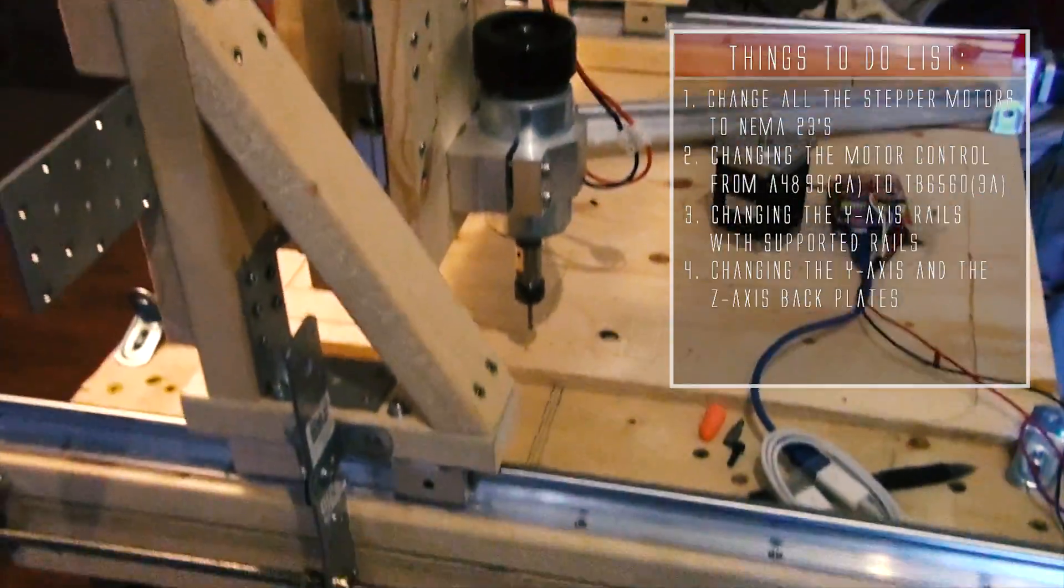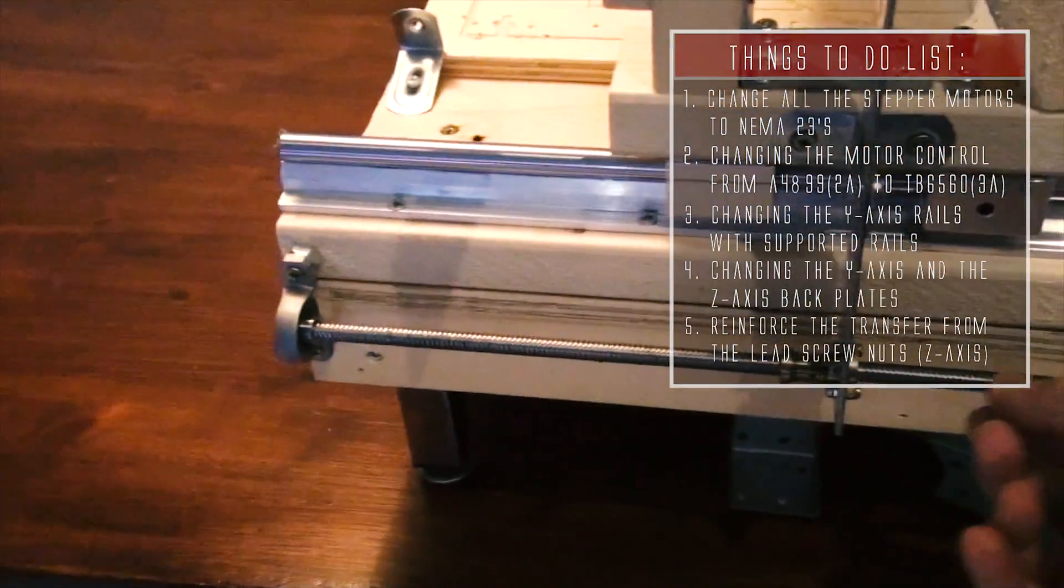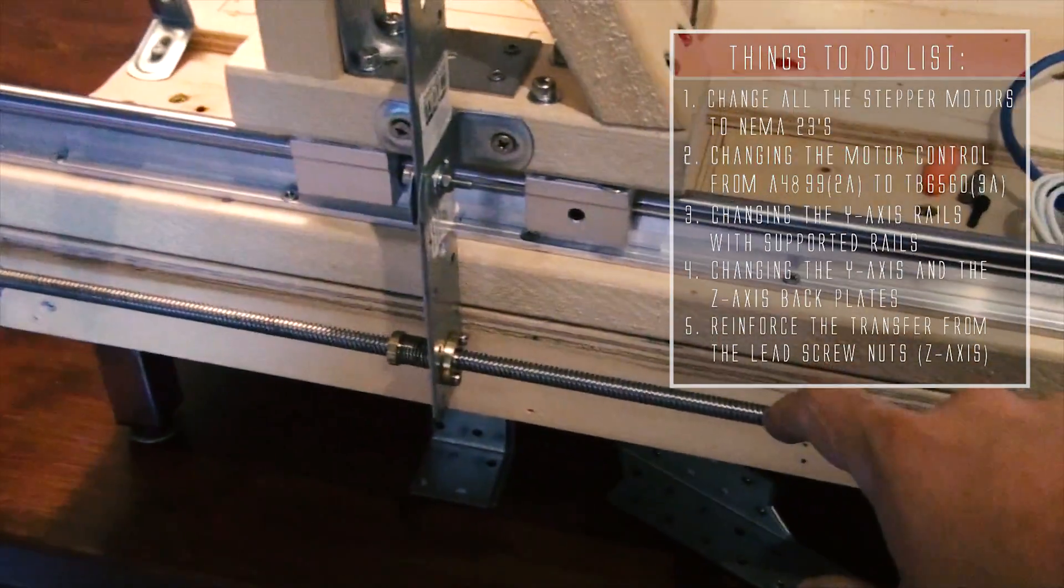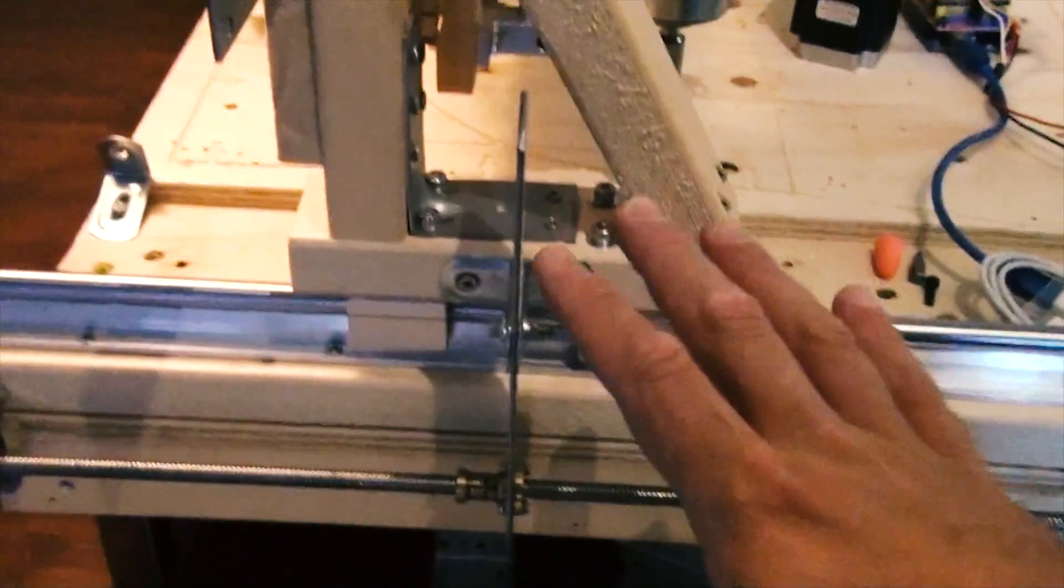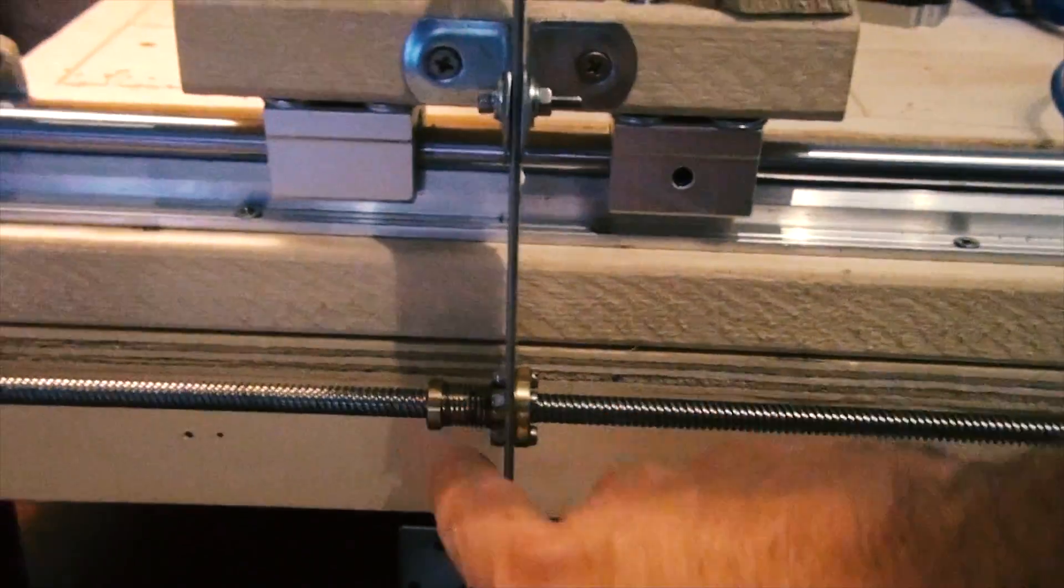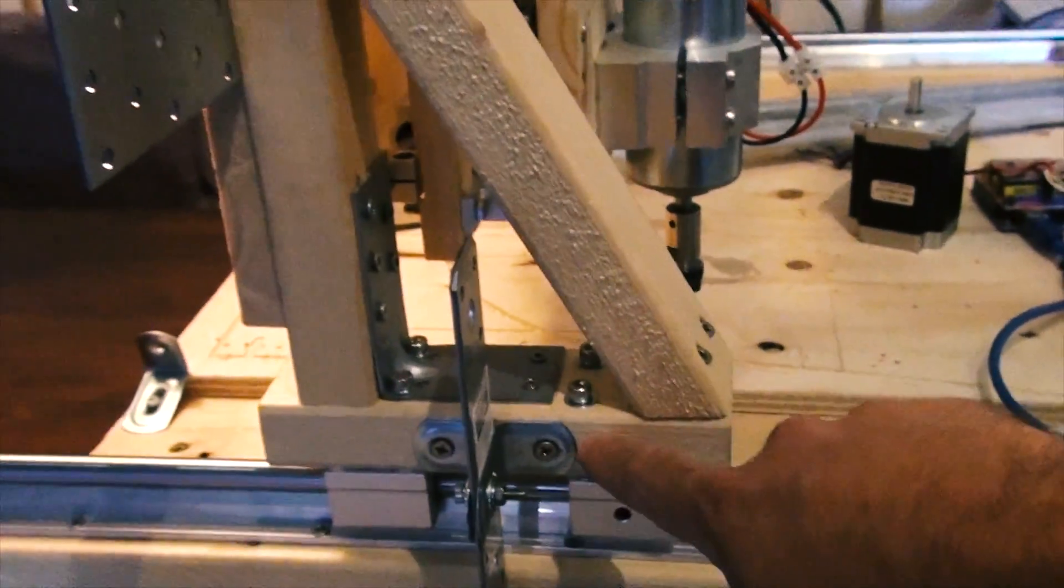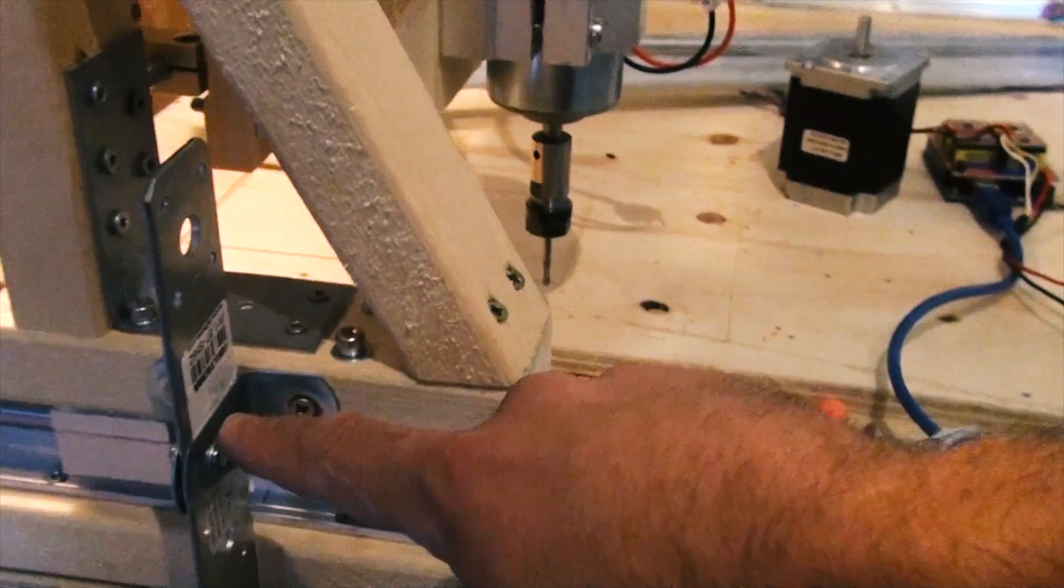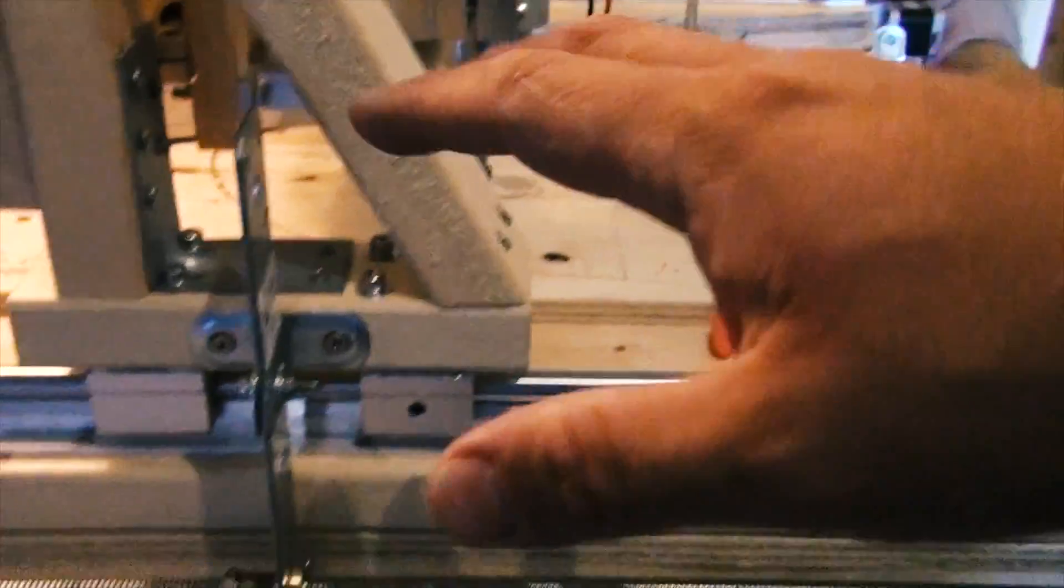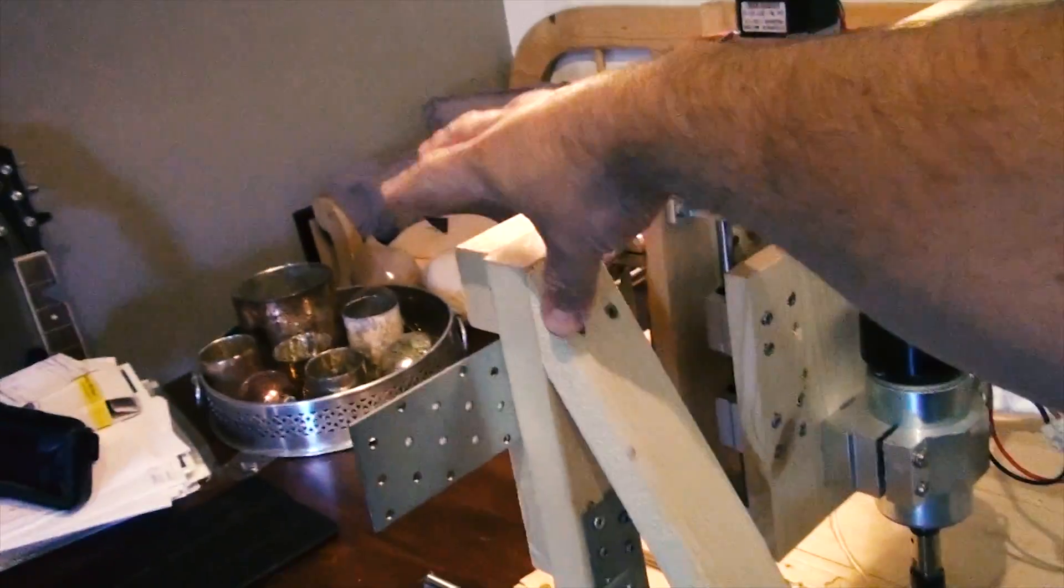And then I come to the fifth problem I have to address. Here we have the lead screw for the x-axis, these are the x-axis supported rails - that's all good. From the lead screw anti-backlash nut and up to the z-axis rails, I use this steel plate with these corners. The problem with this - you can see when I'm trying to pull the z-axis back and forth...